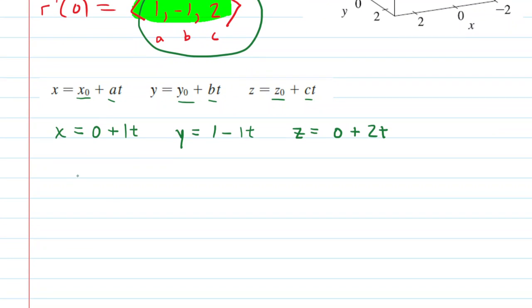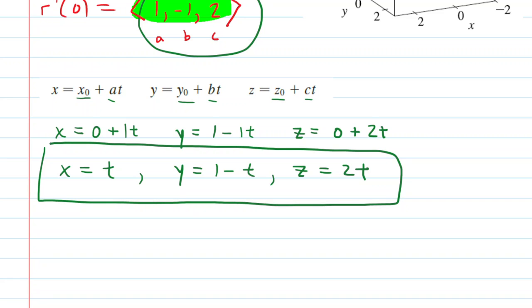There we have it. Everything is plugged in. We can simplify, of course. So we have x is equal to just t, y is equal to 1 minus t, and then z is equal to 2t. And these are the answers. So this is the parametric equation of the line passing through the given point that was tangent to the original vector function curve.